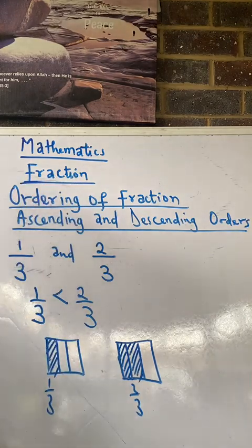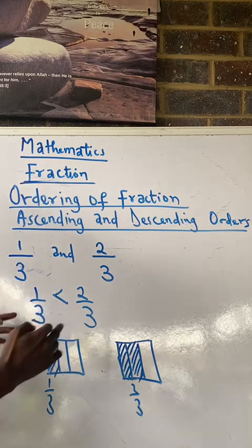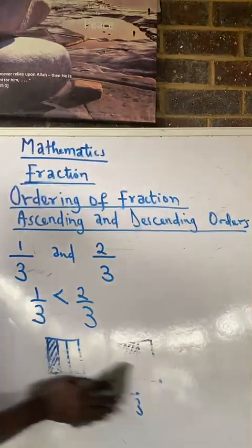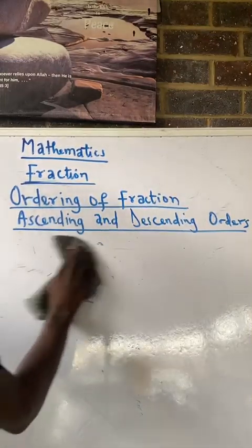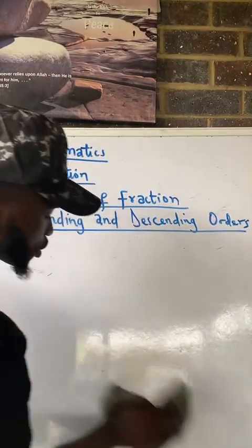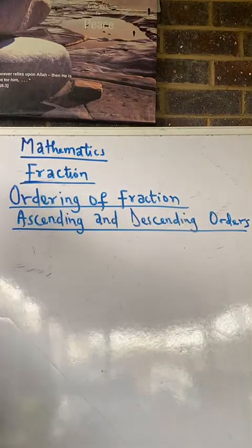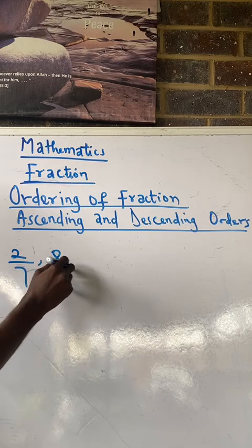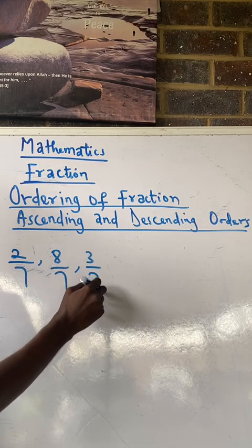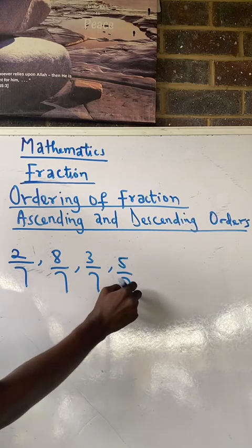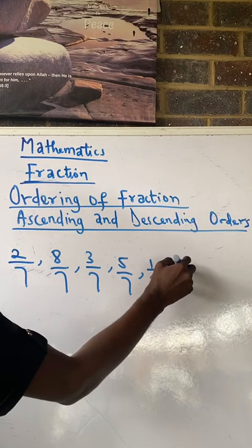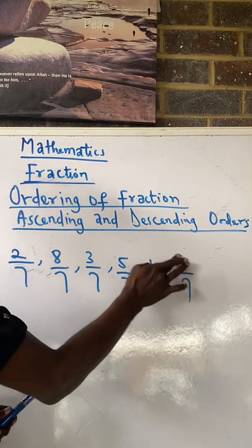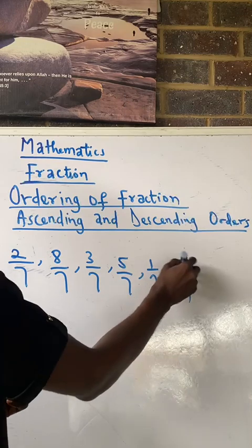This is just a simple explanation. Now, it is not only for two fractions. Even if you have a group of fractions with the same denominators. If you have 2 over 7 and 8 over 7 and 3 over 7, 5 over 7, 1 over 7, and 6 over 7.